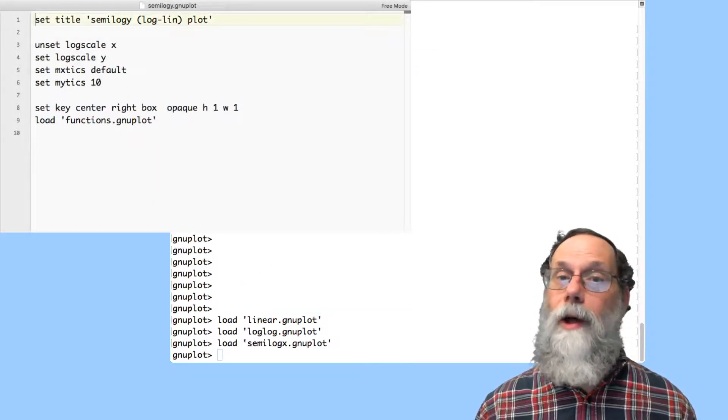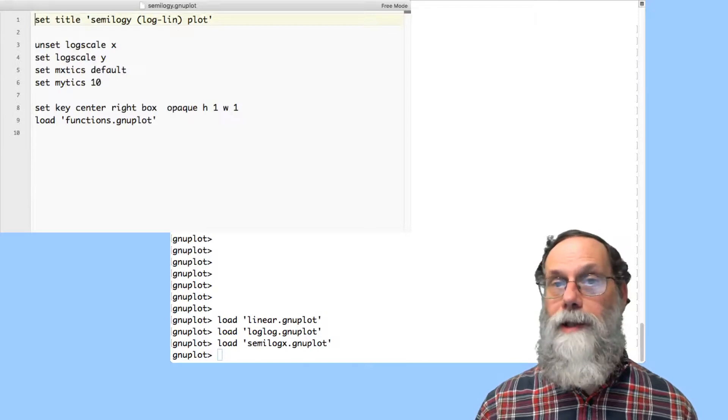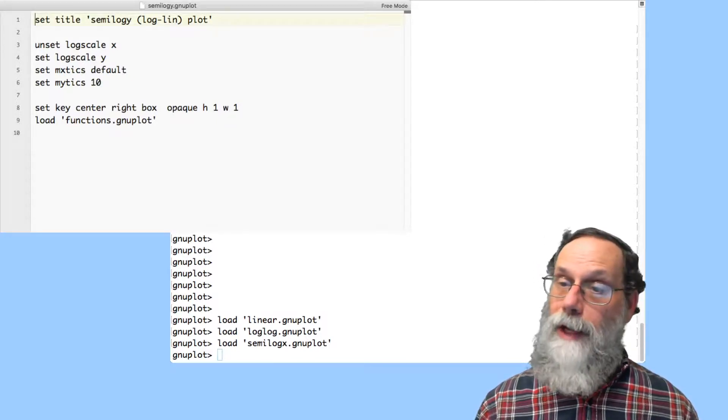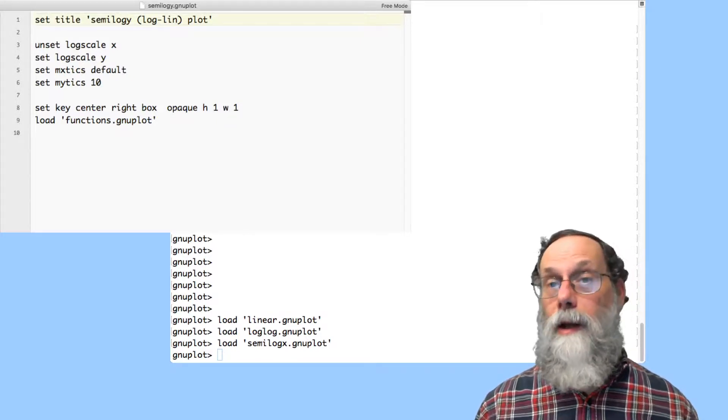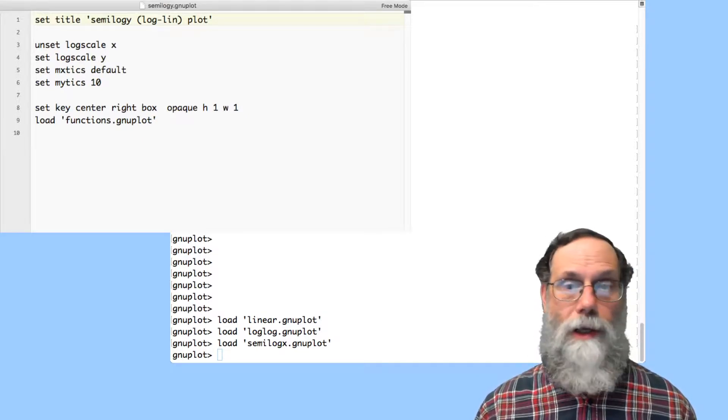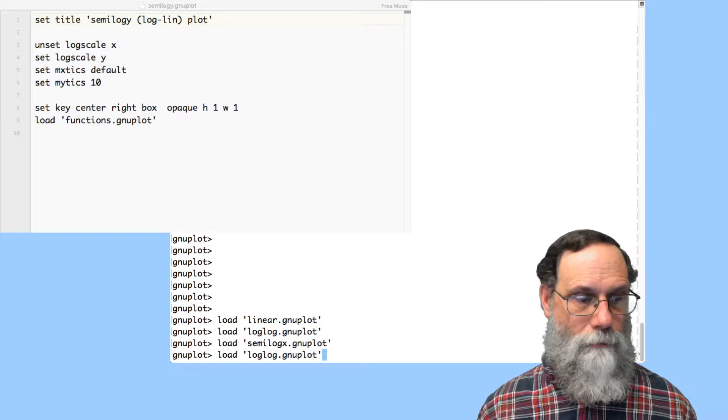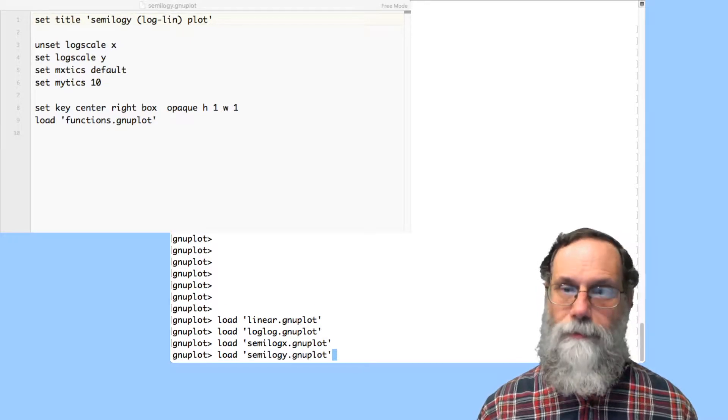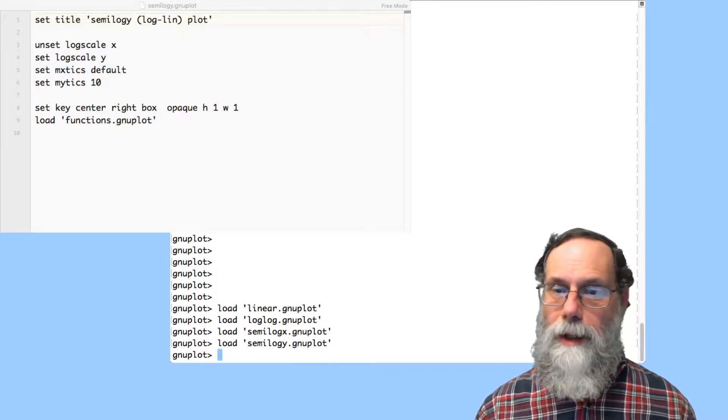We'll look at that by switching to semilog y. And on semilog y, we obviously take no log scale for x, so we unset that. We set a log scale for y. Let's do the semilog y plot and take a look at it.